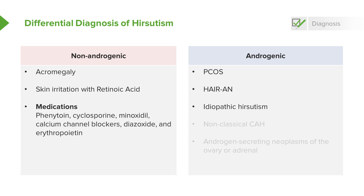There's also something called idiopathic hirsutism. We really don't know why, but we think it's enzymatic activity at the level of the hair follicle. Then there's non-classical CAH. For more information about congenital adrenal hyperplasia, please see the slides entitled CAH, or congenital adrenal hyperplasia.